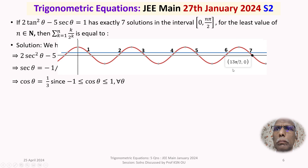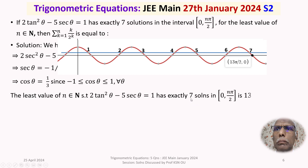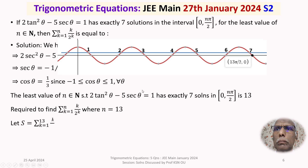The equation has exactly 7 solutions in [0, nπ/2]. The least value of n belonging to ℕ for which this holds is n = 13. We now take n = 13 and write down the finite series S = Σ(k=1 to 13) k/2^k to find its sum.